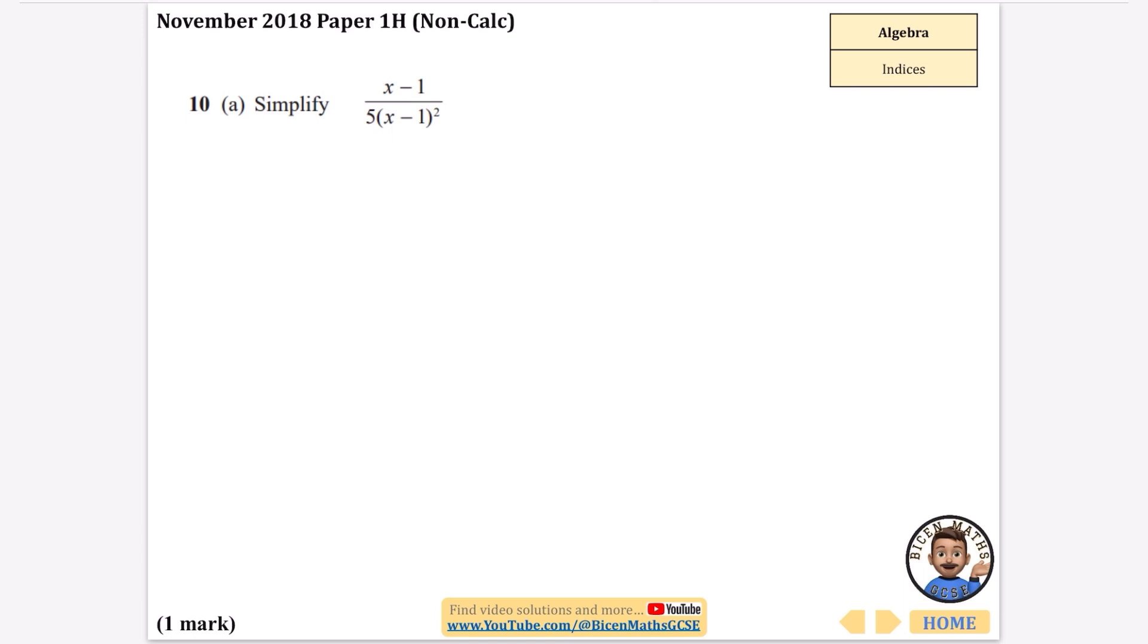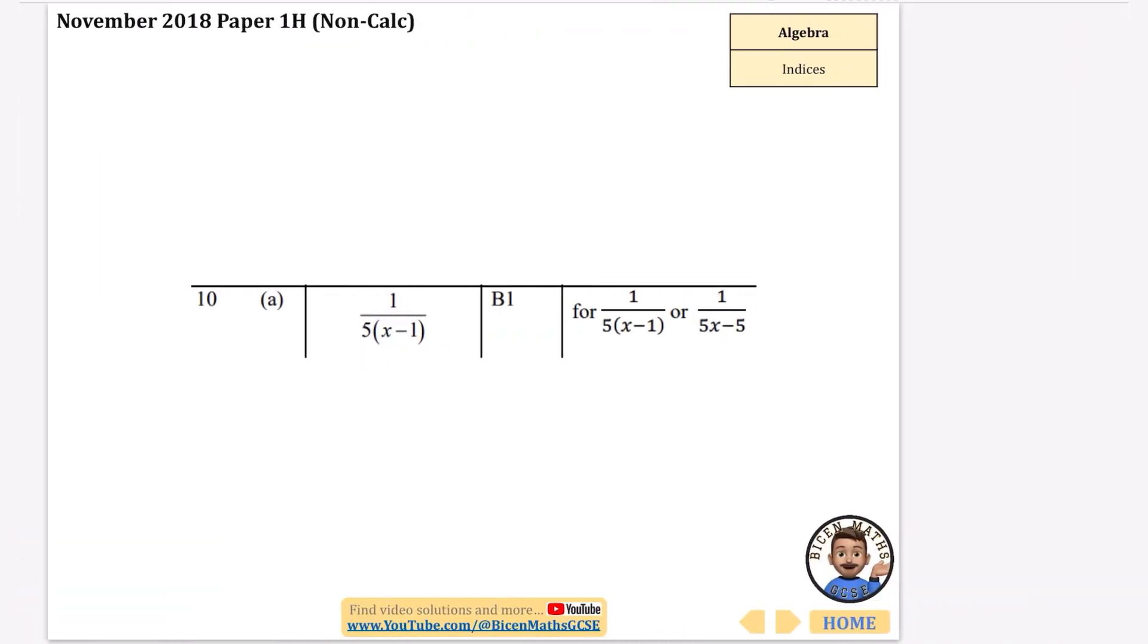Okay, this one is to do with simplifying. Now you might be tempted to try and expand these brackets that we've got here, but actually it's about recognising that you can divide the top and bottom by x minus 1. If I divide the top by x minus 1, I get 1, and if I divide the bottom by x minus 1, I get x minus 1, because x minus 1 squared, if I divide that by x minus 1, you just get left with x minus 1. So the answer is 1 over 5 brackets, x minus 1 as we have here.